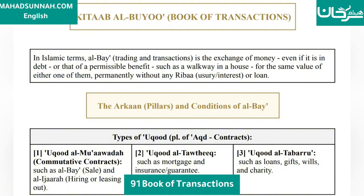The pillars and conditions of al-bay'. Types of Ukud (Contracts): First, Al-Uqud al-Mu'awidah — community contracts — such as al-bay' (sale) and al-ijar (hiring or leasing out). Second, Al-Uqud al-Tawthiq, such as mortgage, insurance, and guarantees. Third, Al-Uqud al-Tabarra, such as loans, gifts, wills, and charity.